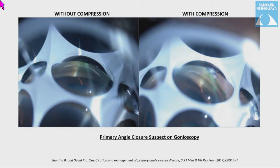On gonioscopy, as we can see in this picture, without compression there is iridotrabecular contact, and on compression the angle opens up to the scleral spur.